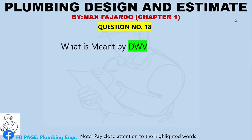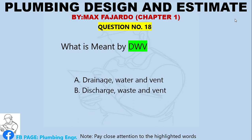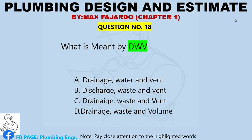Question Number 18. What is meant by DWV? A. Drainage, water and vent. B. Discharge, waste and vent. C. Drainage, waste and vent. D. Drainage, waste and volume.